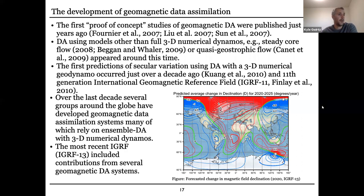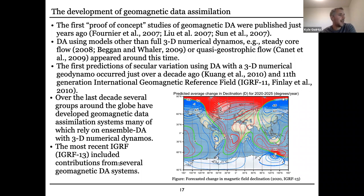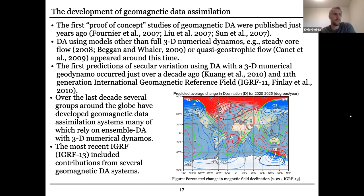We've gotten to the point where the most recent IGRF release's predicted secular variation — the predicted change in declination in units of degrees per year for the coming five years — includes contributions from several of these geomagnetic DA systems. Several of them use dynamo models; there are also people using simplified versions or some physics-based models with simplifications.